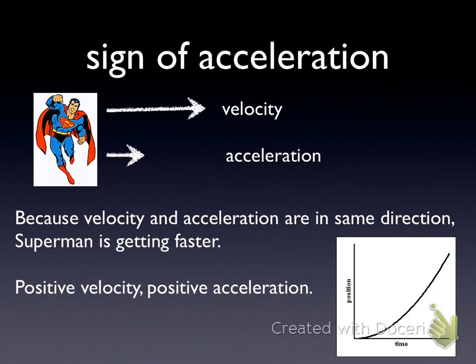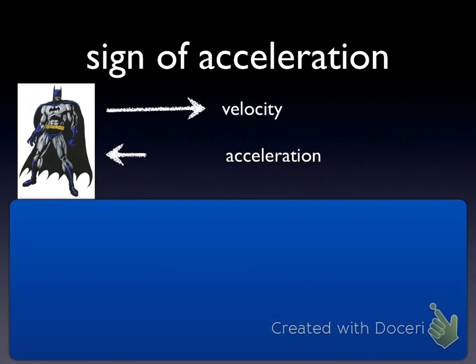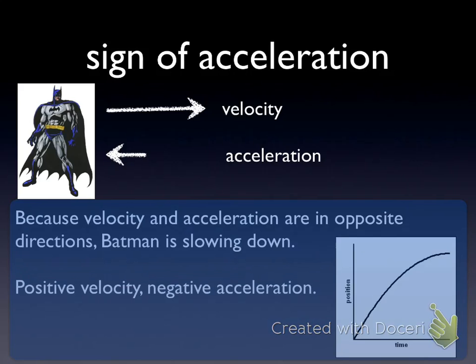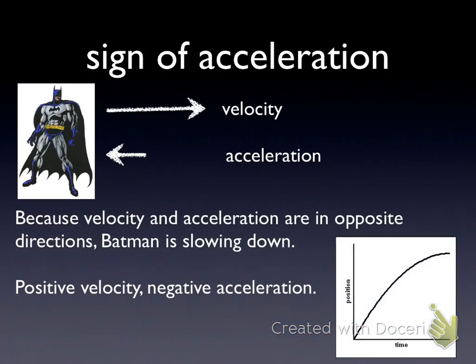Another visual example, this time Batman. Batman's moving with a positive velocity and he experiences a negative acceleration. What's going to happen to his velocity over time? He'll slow down. That acceleration is pulling at his velocity, slowing him down. In this case, you have a positive velocity and a negative acceleration, which acts to slow you down.